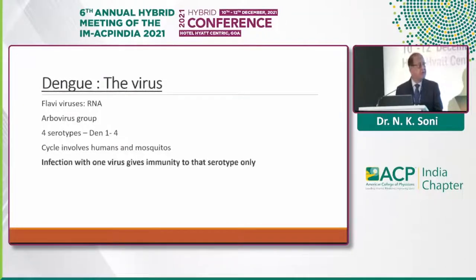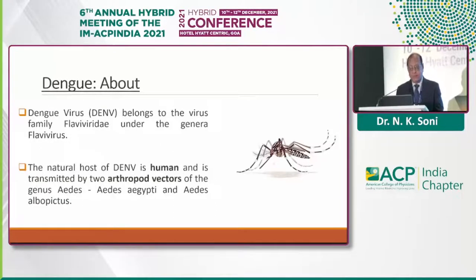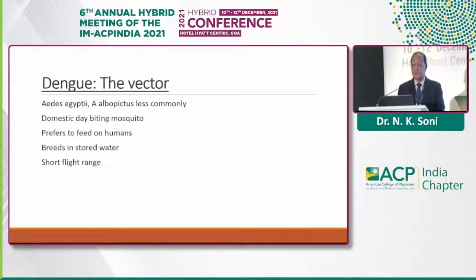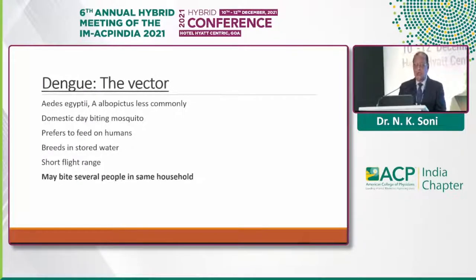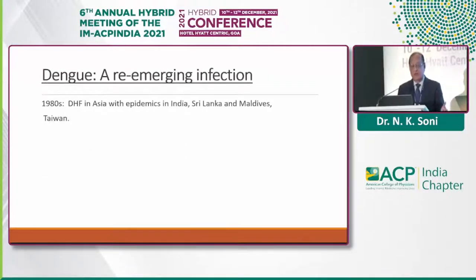The cycle involves humans and mosquitoes. Infection with one serotype gives immunity to that serotype only — that is very important to know. Once infection occurs with a second serotype, it becomes more complicated. The dengue virus belongs to the flavivirus family. Its natural host is humans and it is transmitted by arthropod vectors: Aedes aegypti and Aedes albopictus. Aegypti is more common. It is a domestic, day-biting mosquito that prefers to feed on humans, has a short flight range, and breeds in stored water. This mosquito may bite several people in the same household, which is why sometimes the whole family gets infected.